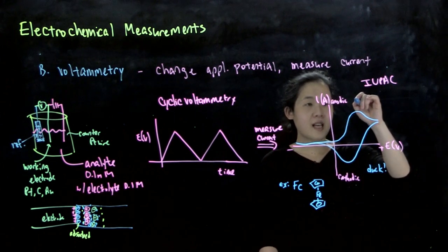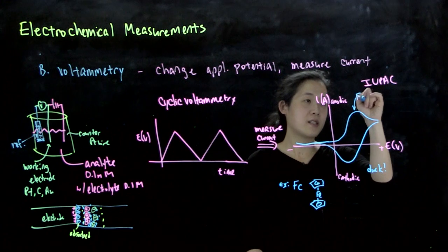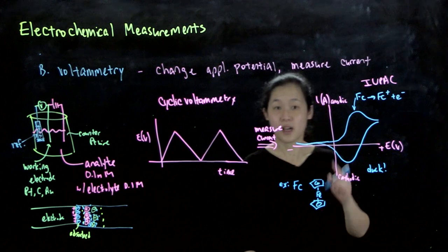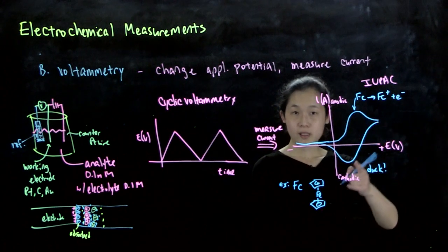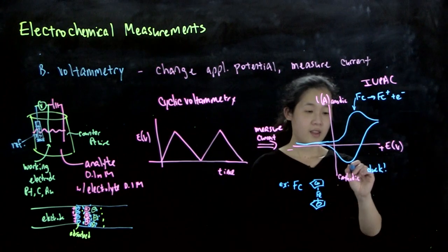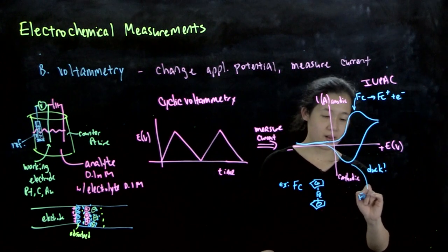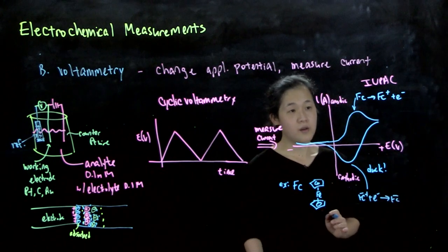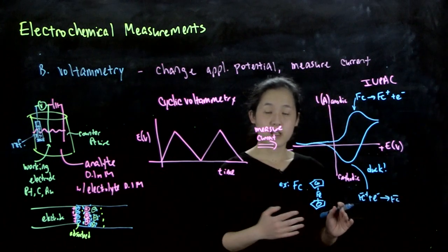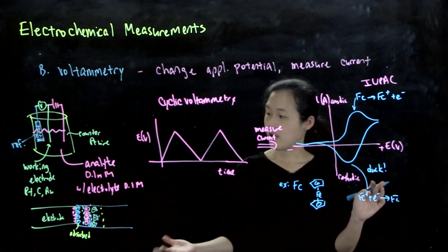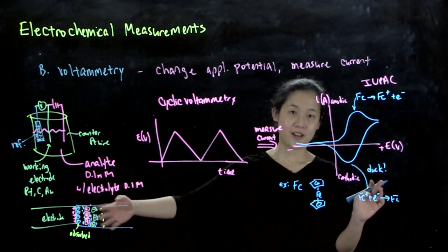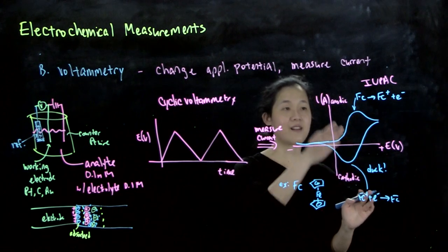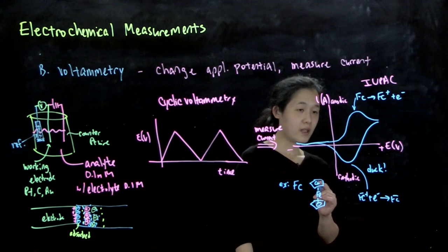So on this side, anodic current is flowing. This is when ferrocene is going to ferrocene plus, plus electron. So this is anodic current getting oxidized. On the reverse, once we're going more negative, then here is cathodic current. So this is when ferrocene plus is getting reduced to ferrocene. So the amount of current that's flowing just depends on the concentration of your analyte nearby, and then also related to the potential. And then we can transfer electrons there, and we get a higher current.